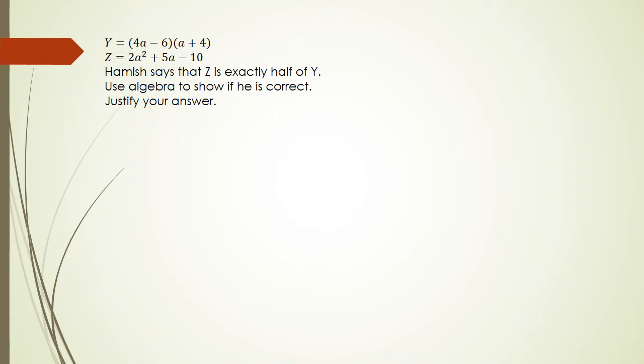Okay, I hope you've had a chance to have a crack at this question. Basically, what we're going to do is expand the double brackets. So we got y is equal to 4a minus 6 multiplied by a plus 4. So using whichever method you use for your quadratics, in my case, I've got 4a times a is 4a squared,